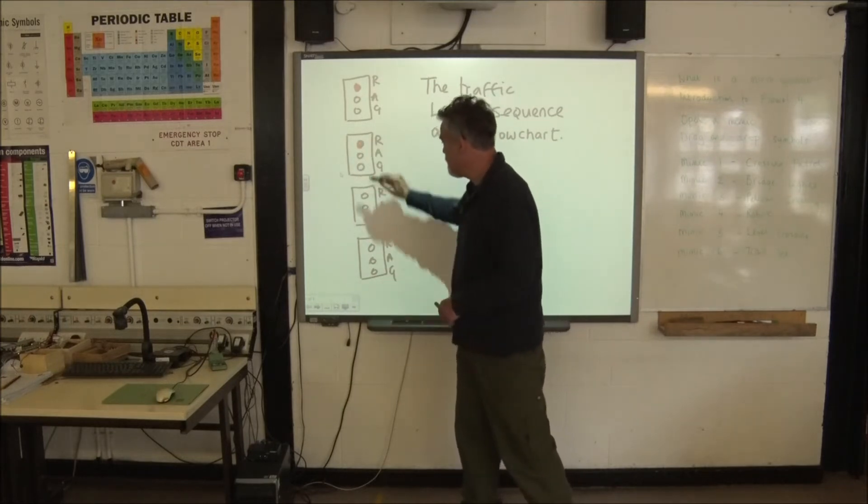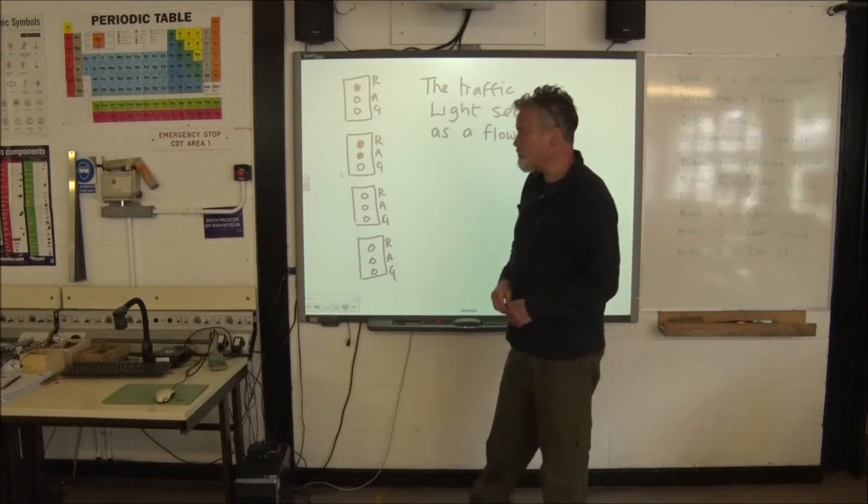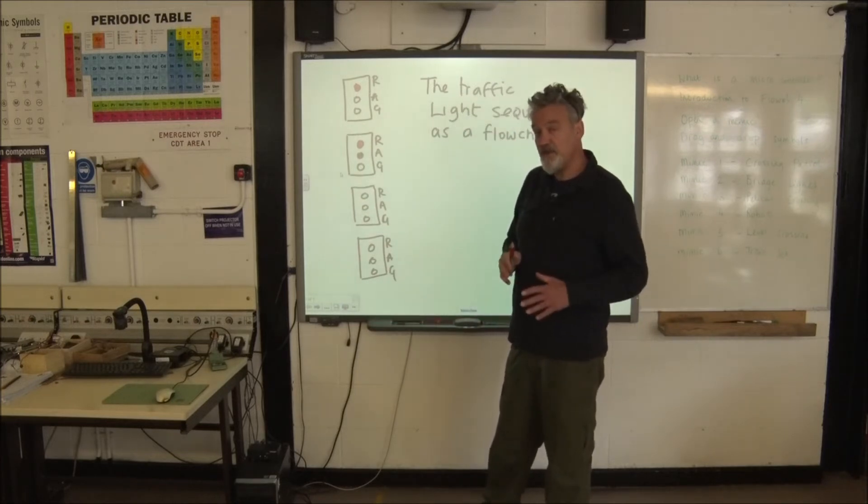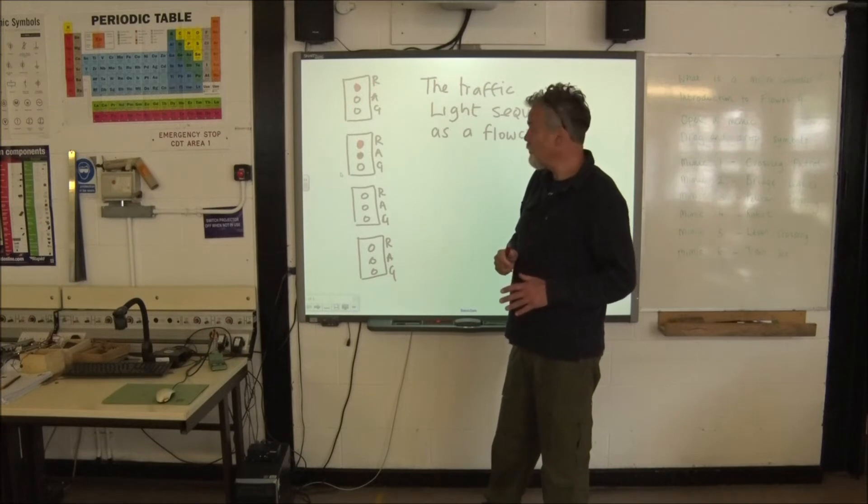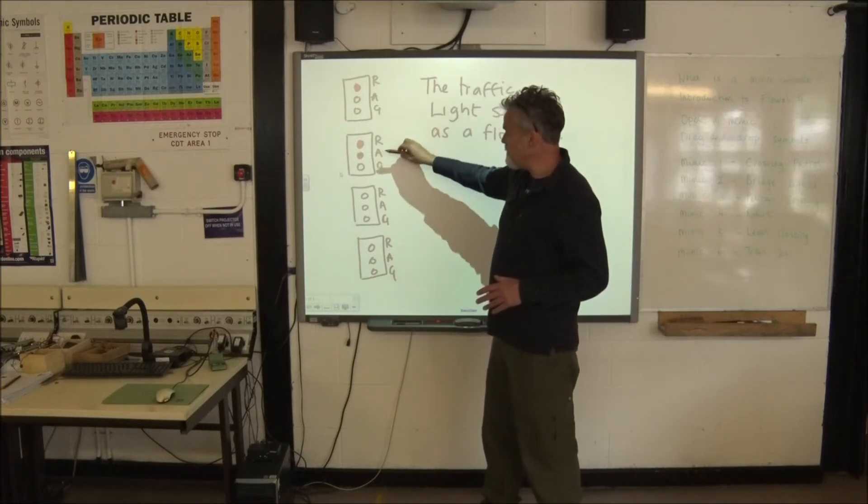Okay, the two lights come on simultaneously and that is, if you don't believe us, you're going to have to have a look carefully at traffic lights next time you're out. So, red followed by red and amber.